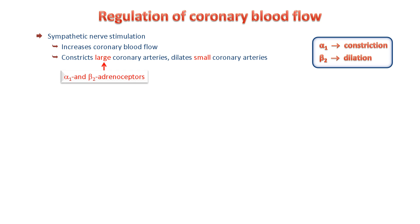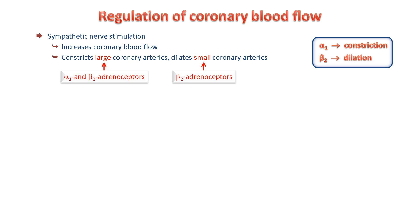This constriction helps to propel blood into the smaller vessels, which are the main determinants of tissue blood flow. The small coronary arteries mostly express beta-2 receptors, so they dilate in response to sympathetic nerve stimulation, thereby increasing blood flow in the tissue and increasing the delivery of oxygen to the heart's muscle.